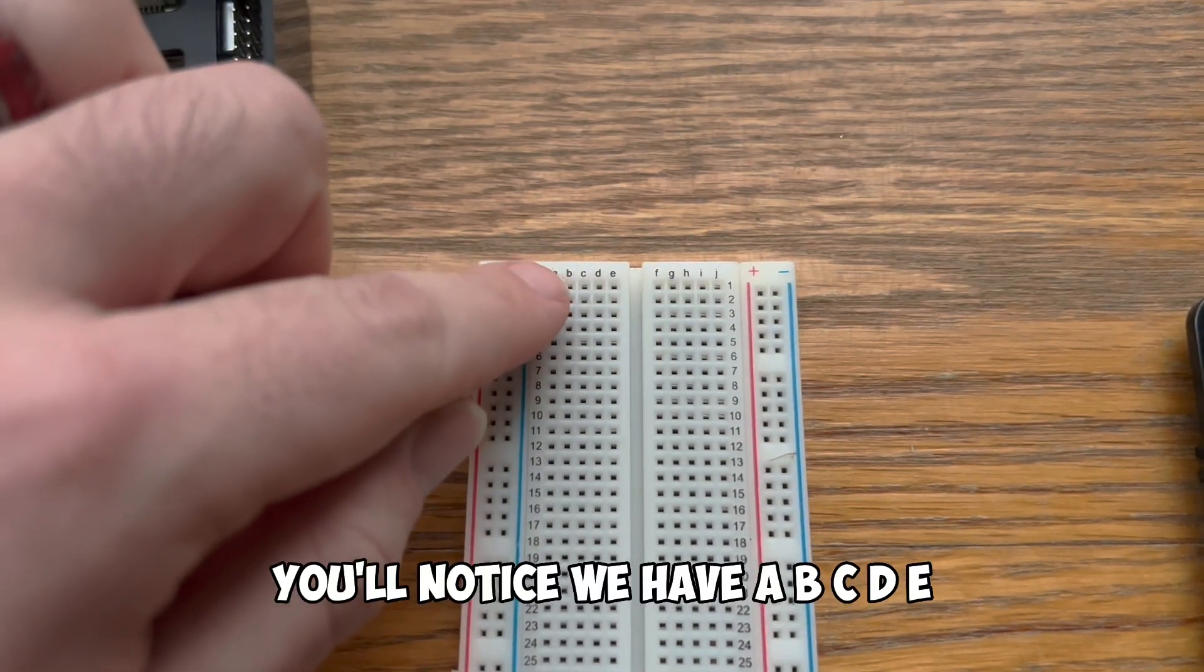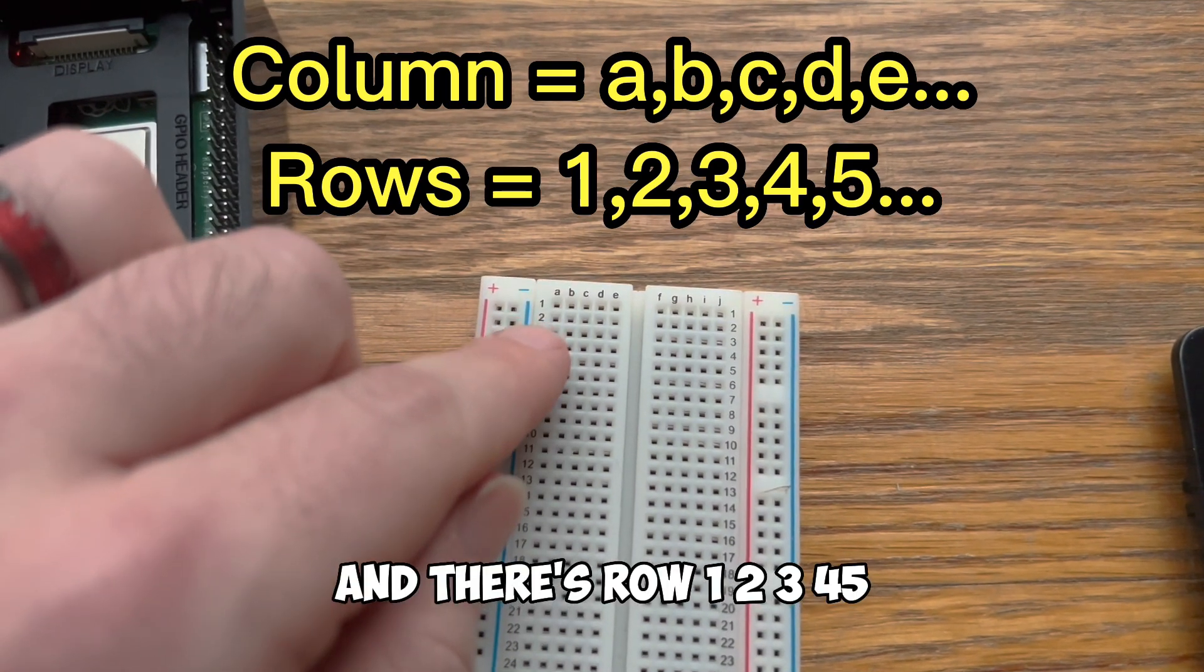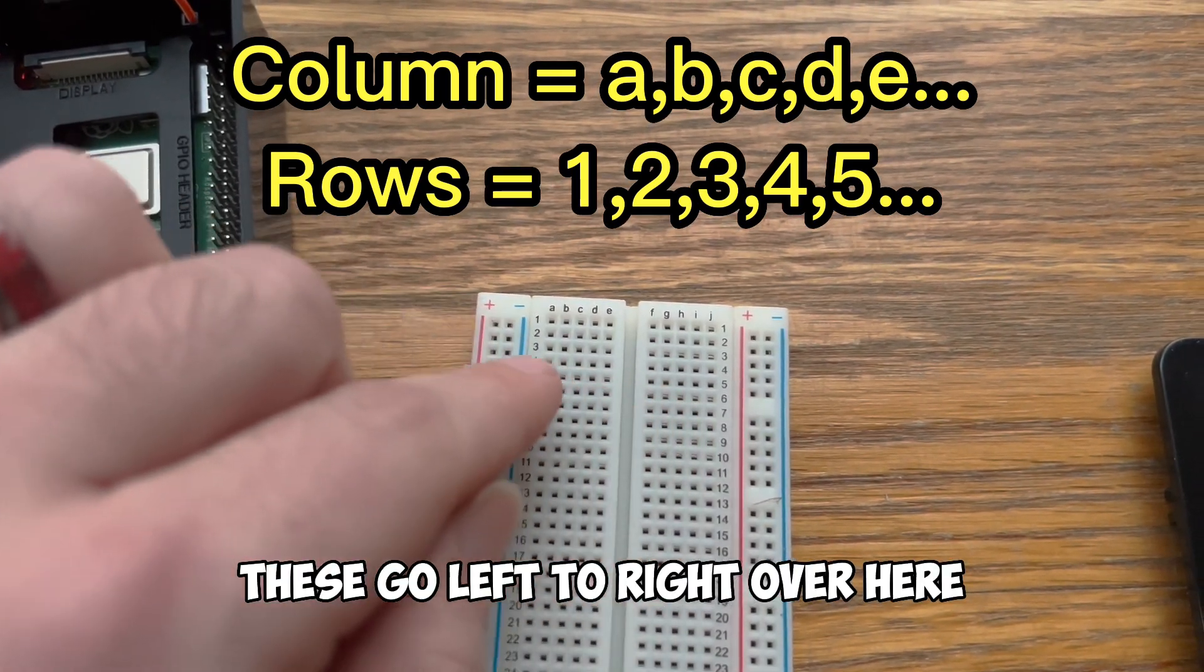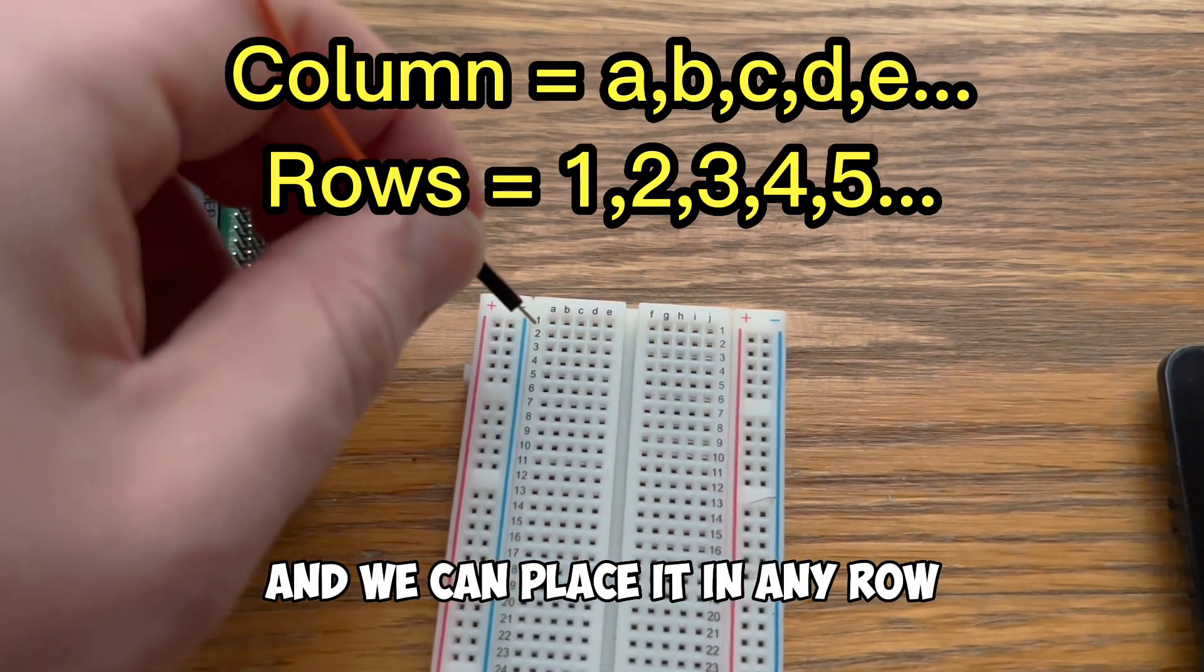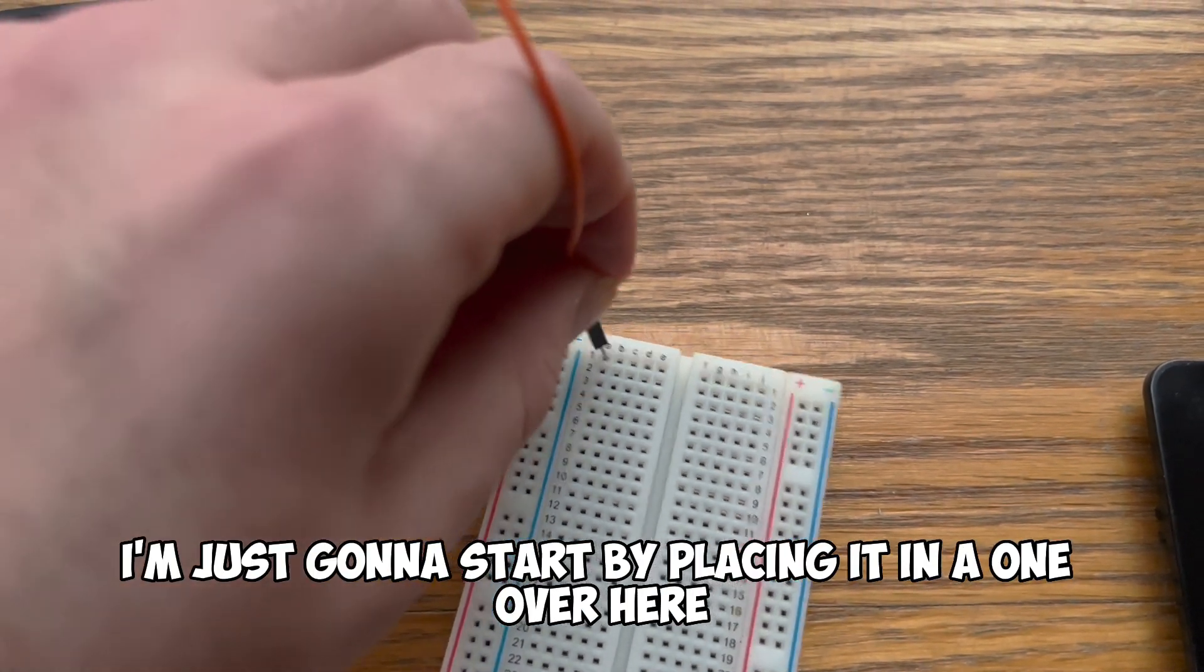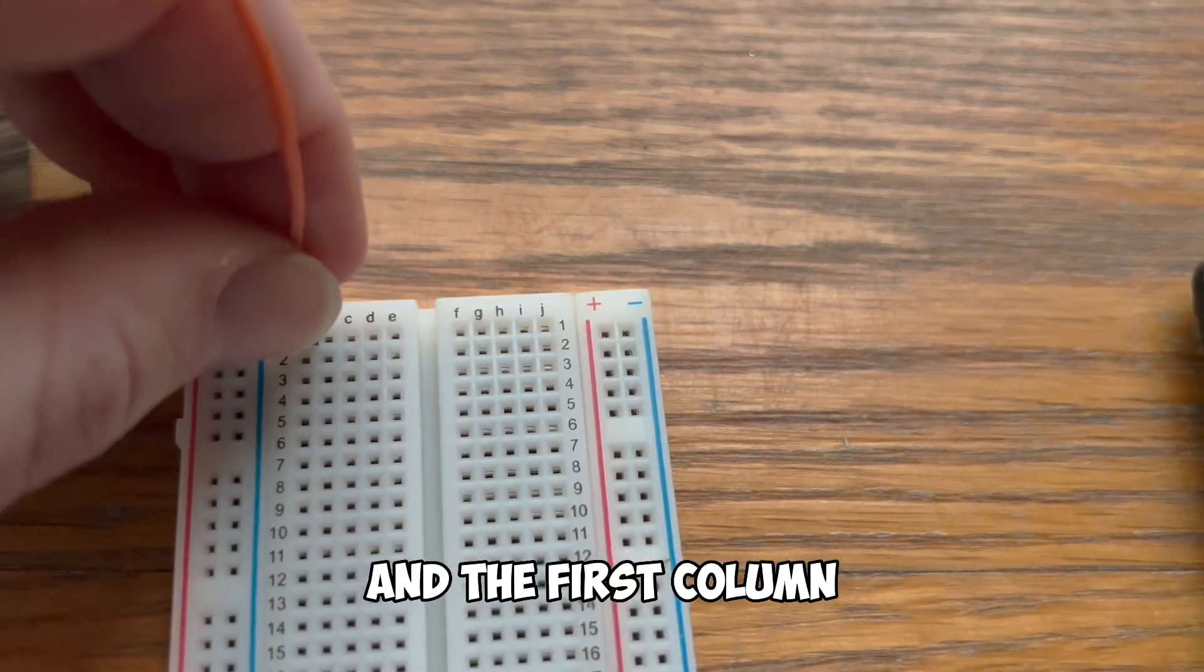On our breadboard you'll notice we have columns A, B, C, D, E. These columns go up and down and there's rows 1, 2, 3, 4, 5. These go left to right over here. We're going to take this prong and we can place it in any row. I'm just going to start by placing it in A1 over here which is the first row in the first column.